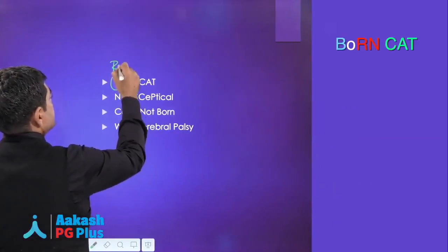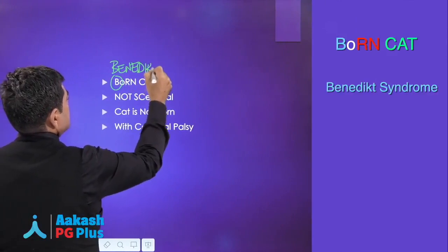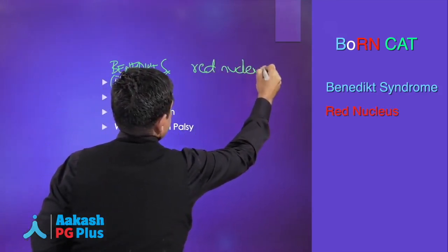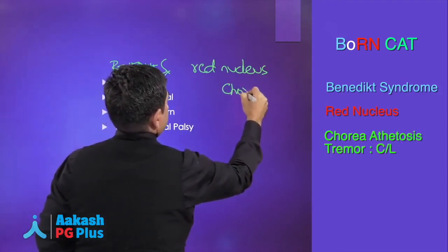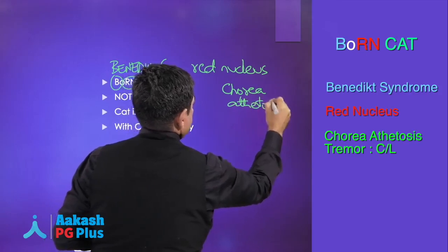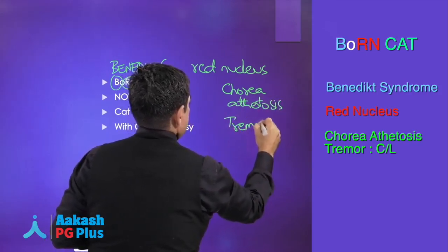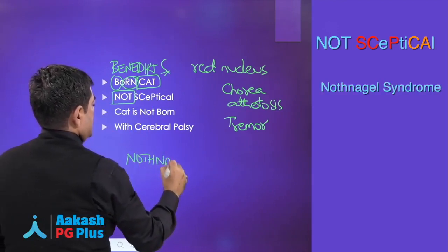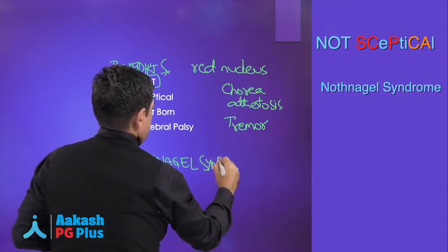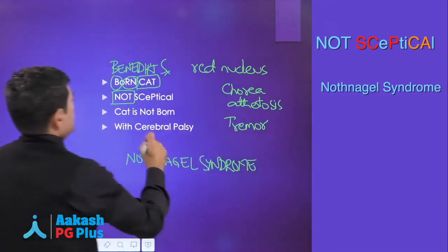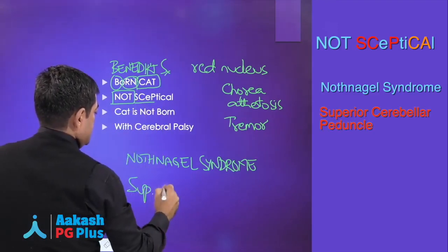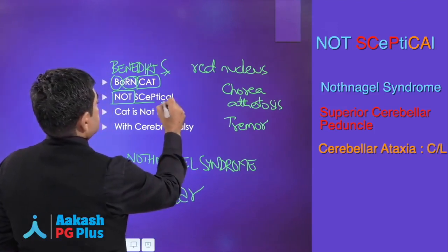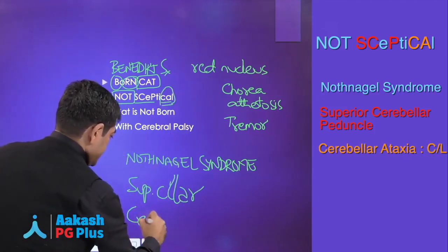Here B is Benedict syndrome — please write that down. RN is the red nucleus, that is what gets affected in Benedict syndrome, and this patient will have chorea, athetosis, and tremor. Nothnagel syndrome involves the SCP — the superior cerebellar peduncle, not cerebral — and CA stands for cerebellar ataxia.